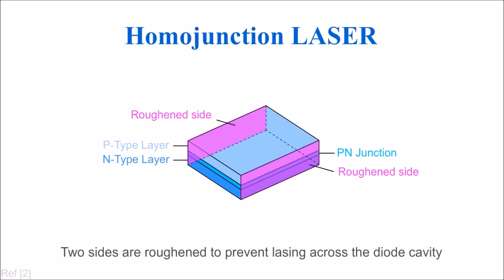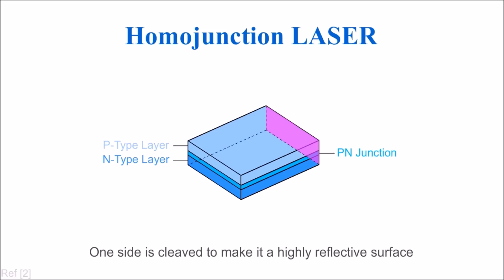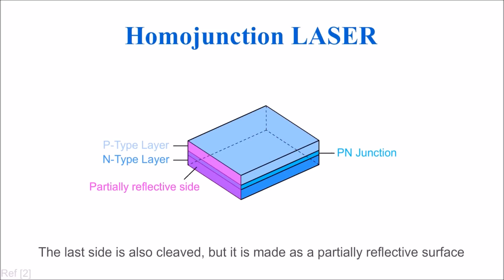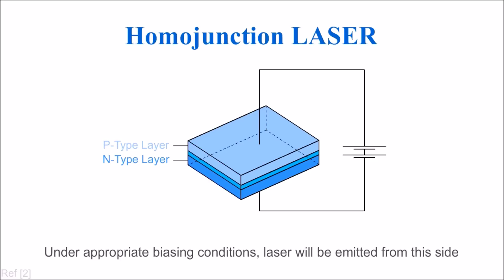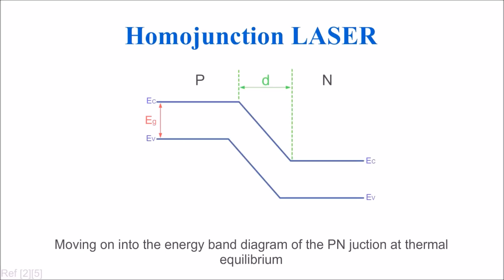Two sides are roughened to prevent lasing across the diode cavity. One side is cleaved to make it a highly reflective surface. The last side is also cleaved but made as a partially reflective surface. Under appropriate biasing conditions, laser will be emitted from this side.